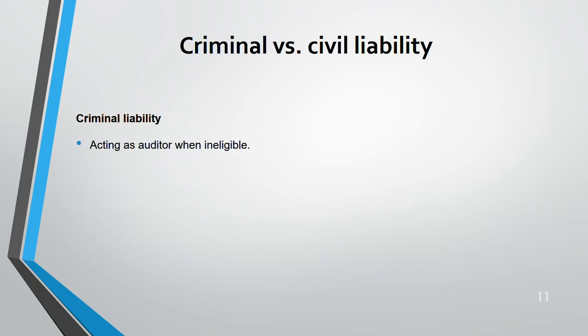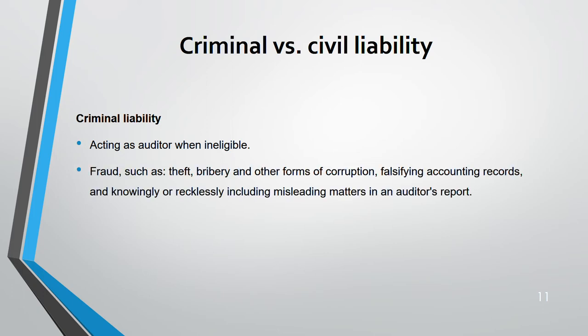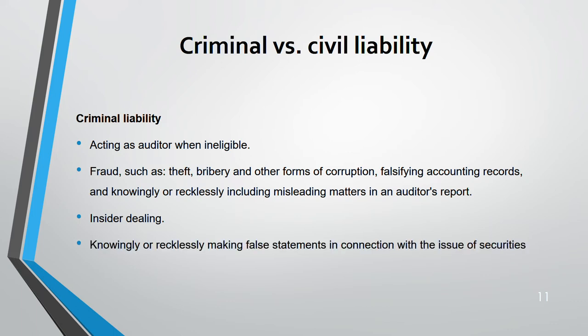Examples of criminal liability when acting as an auditor include: acting when ineligible, being involved in fraud, bribery or other forms of corruption, falsifying accounting records, misleading matters in an auditor's report, insider dealing, and knowingly or recklessly making false statements. Penalties for criminal liability could be fines, imprisonment, or disqualification — including removal of professional membership by the relevant professional body such as ACCA.